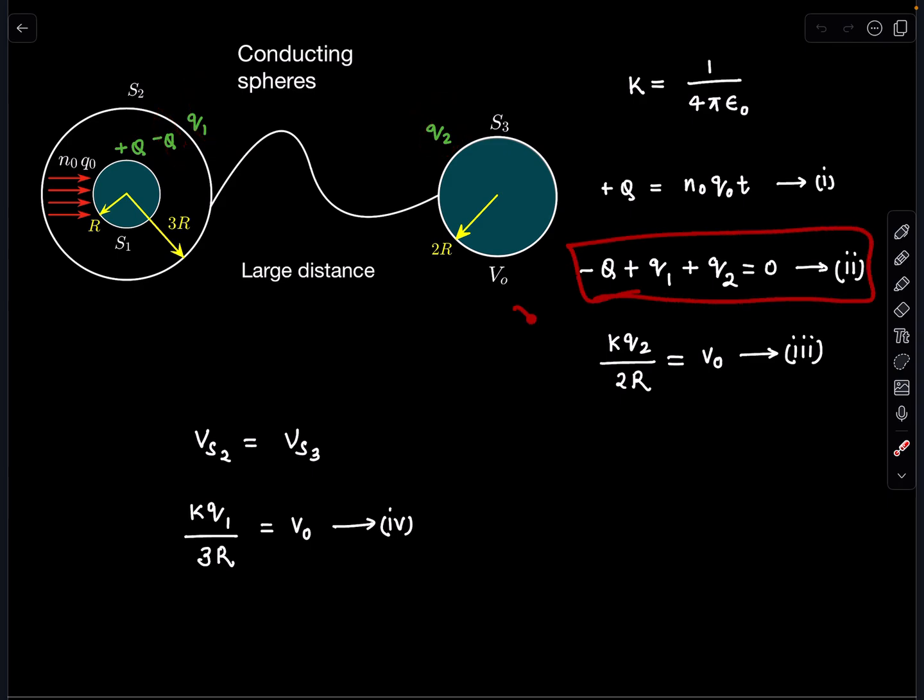Third part: it is given that sphere 3 has a potential of V₀. That means Kq₂/(2R) = V₀.